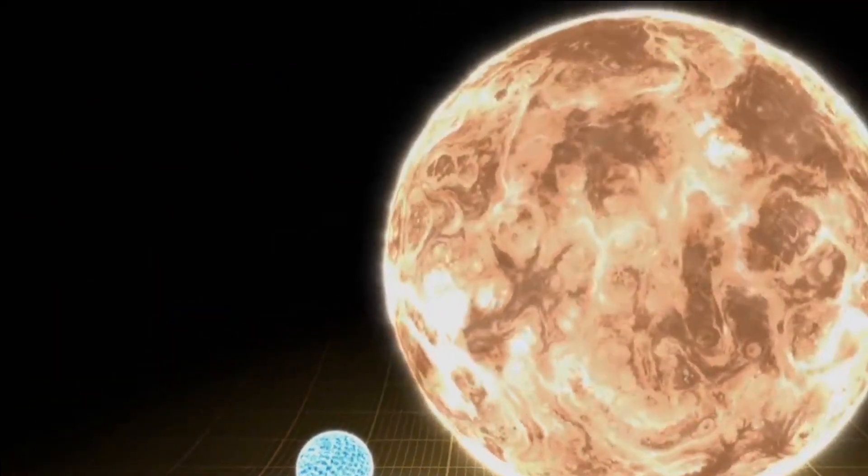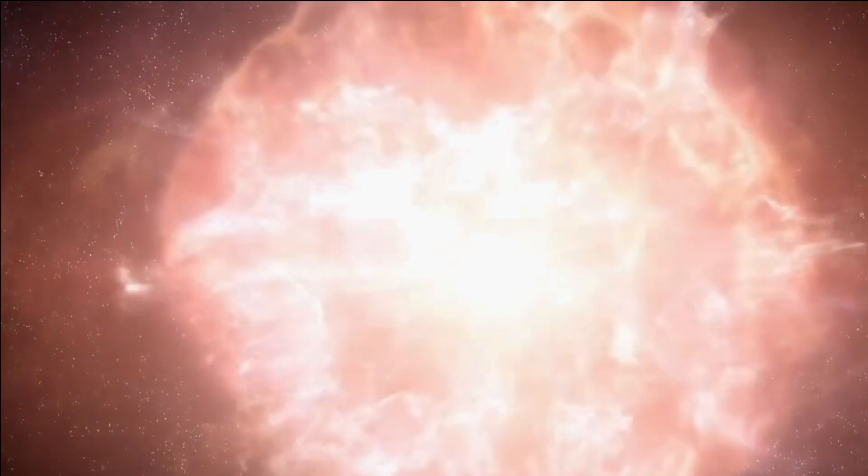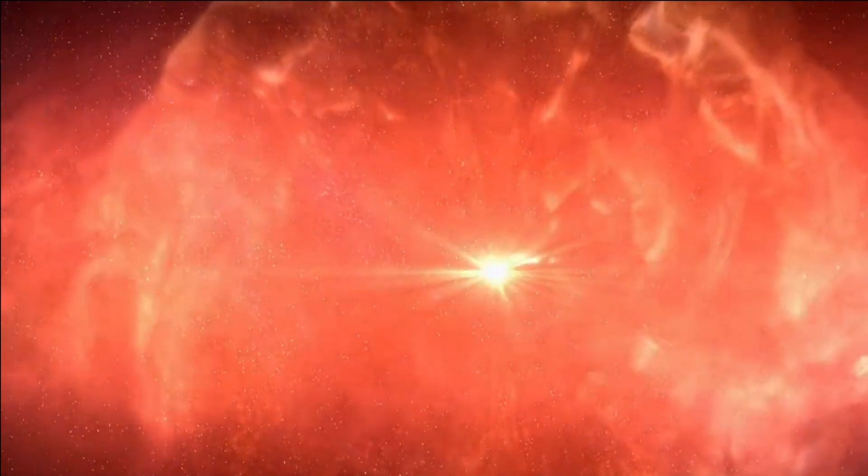Betelgeuse is a red supergiant star located in the constellation Orion. It is one of the brightest stars in the night sky and is easily visible to the naked eye. Betelgeuse is a variable star, meaning its brightness fluctuates over time.